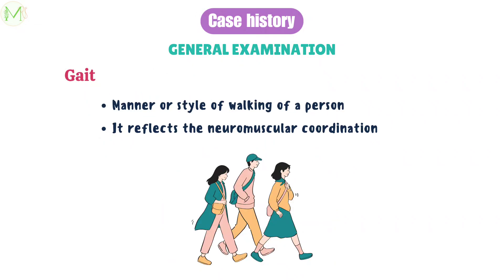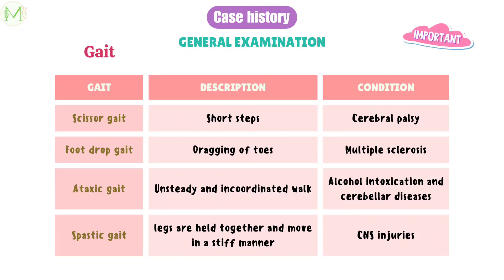Moving on to gait. Gait is the manner or style of walking of a person. Gait should be carefully evaluated because abnormalities of gait are usually associated with neuromuscular disorders that may have dental correlation. These are the possible different types of gaits that a person can have, and this is important from a viva perspective, so kindly do note it.